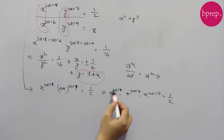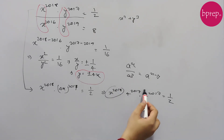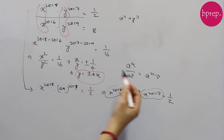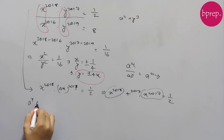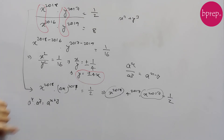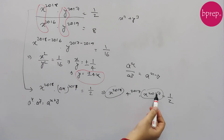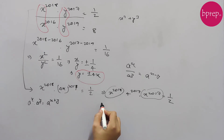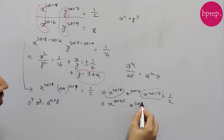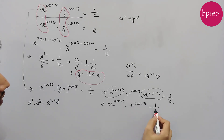Now we apply the rule that a to the power x times a to the power y equals a to the power x plus y. So x to the power 2018 times x to the power 2017 combine to give x to the power 4035. The equation becomes x to the power 4035 times 4 to the power 2017 equals 1/2.